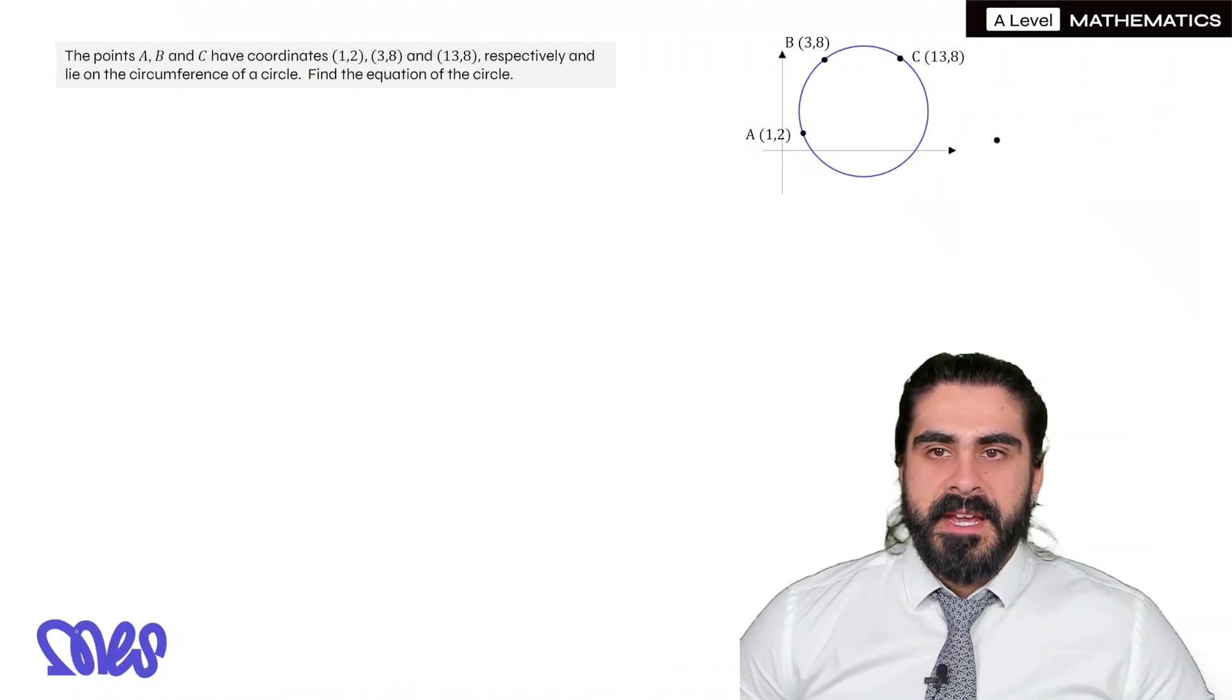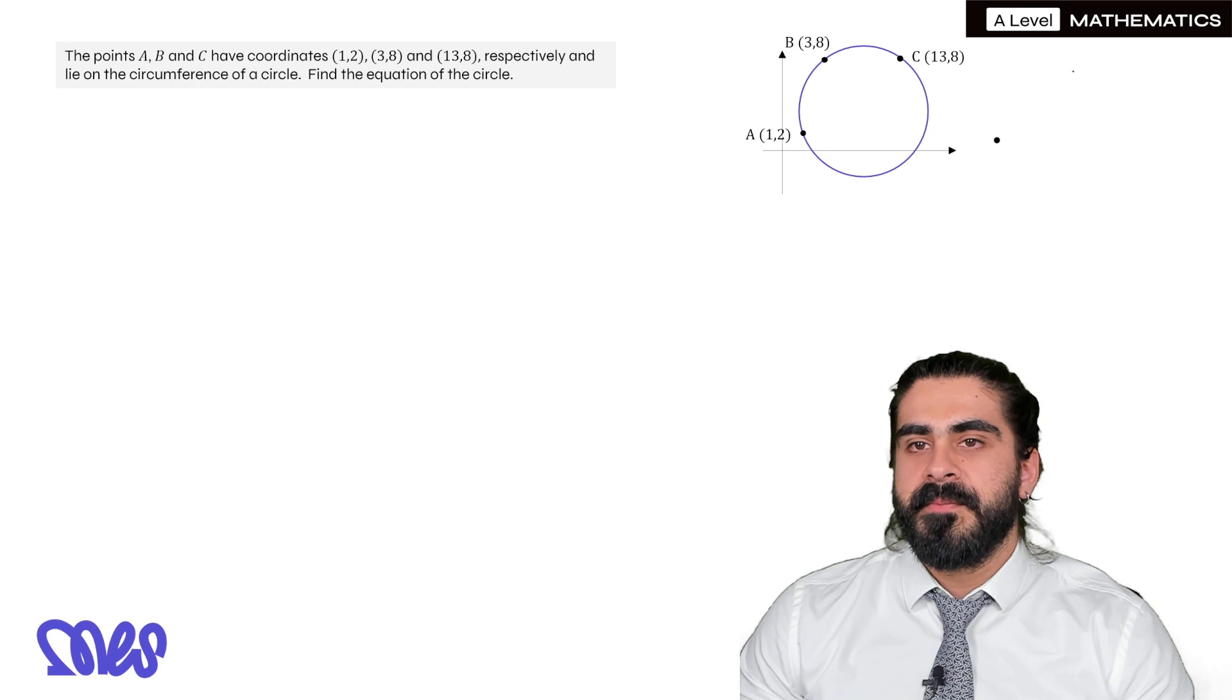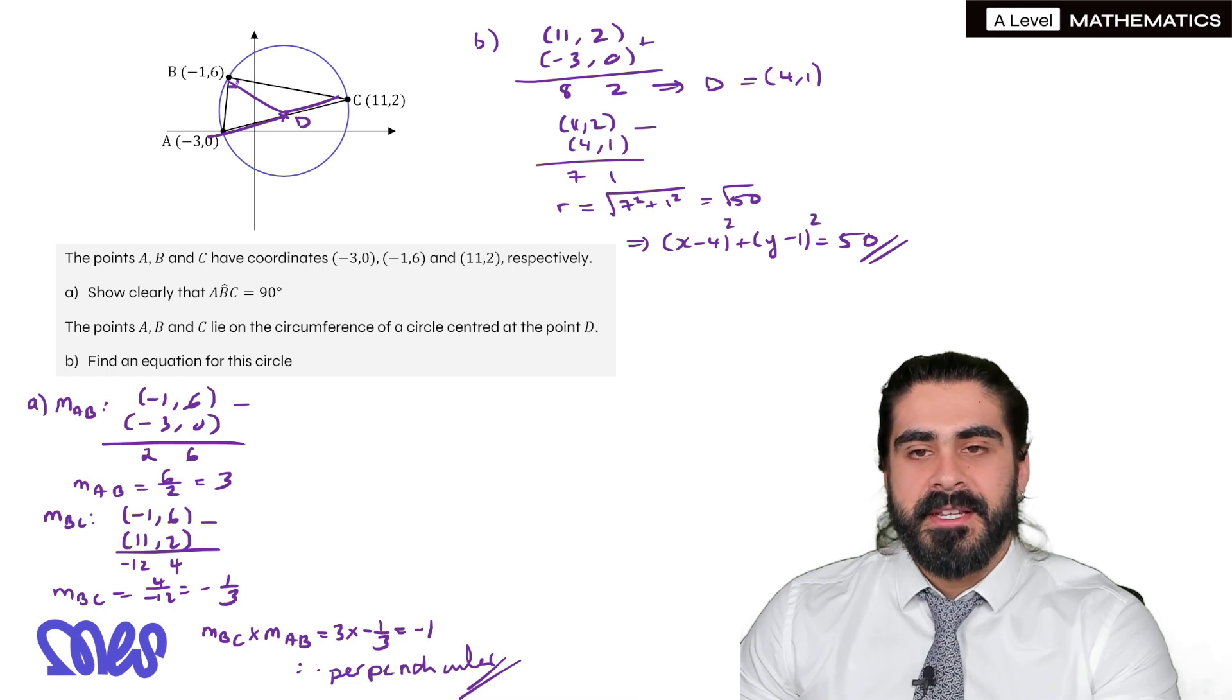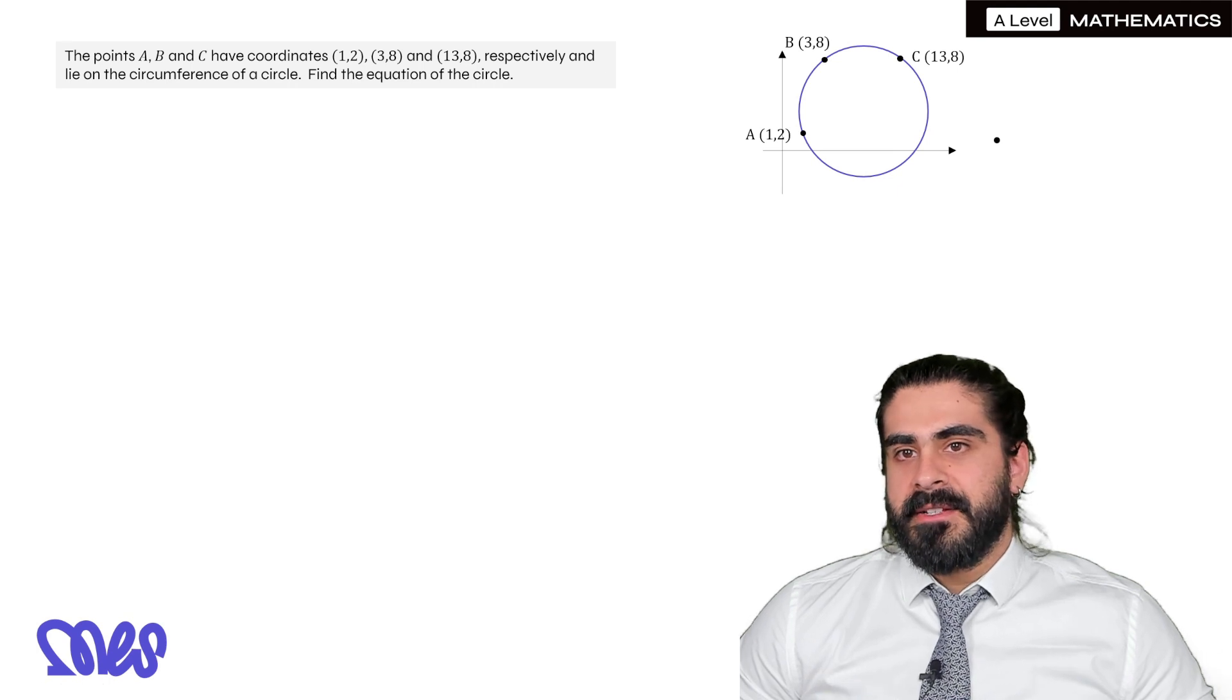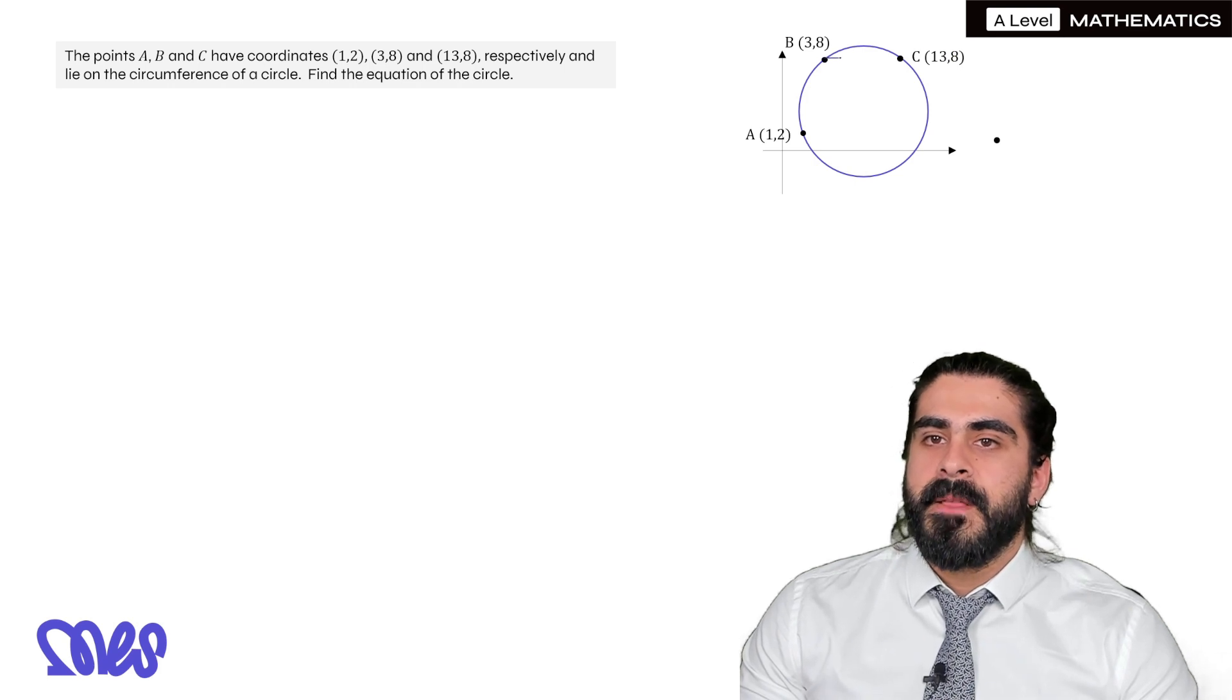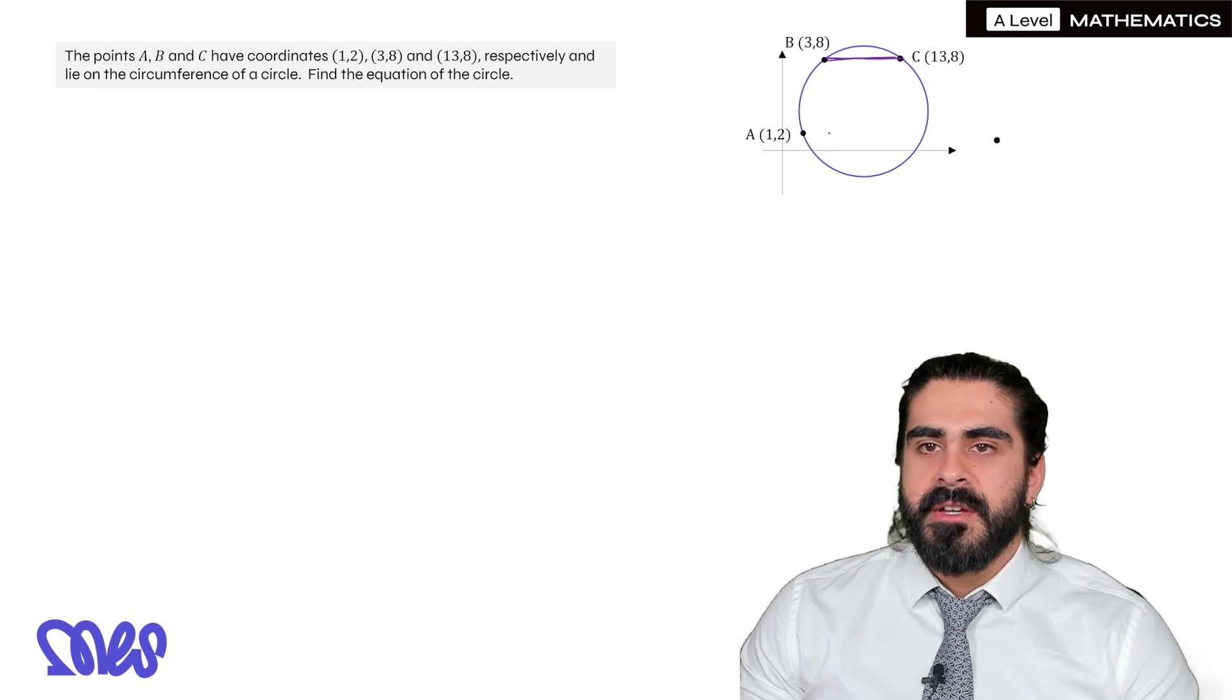The question: points A, B and C have coordinates 1, 2, 3, 8 and 13, 8 respectively and lie on the circumference of a circle. Find the equation of the circle. Now if you look properly, you'll see that B and C are horizontally next to each other. They both have the same y value. How are we going to do this problem? It's very different to the question we just did where the angle was 90 degrees. If you calculate the gradients, we'll notice that they are not angling at 90 degrees. Because B and C have the same y value, the chord connecting them is strictly horizontal, which means if there was supposed to be 90 degrees, A would have to be vertically below B, which is not.